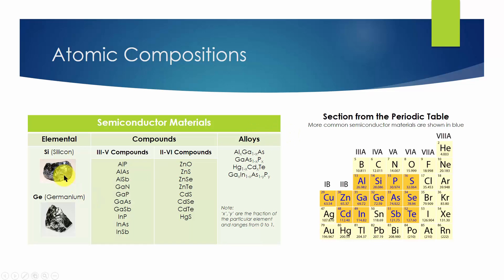Elemental materials are from group 4 of the periodic table. The most common ones are silicon and germanium. Since the fabrication technology of silicon is so mature and advanced, silicon is the most important and most commonly used semiconductor material.